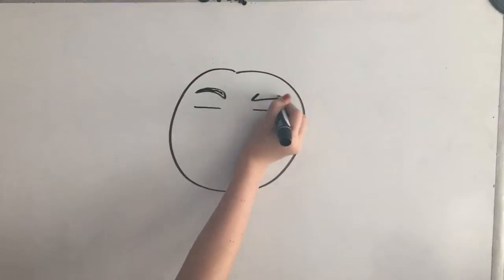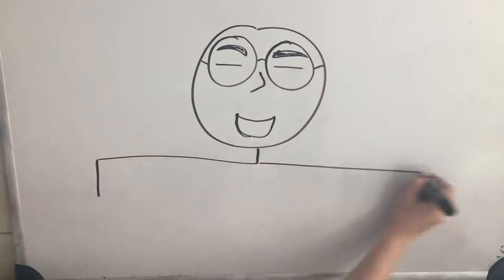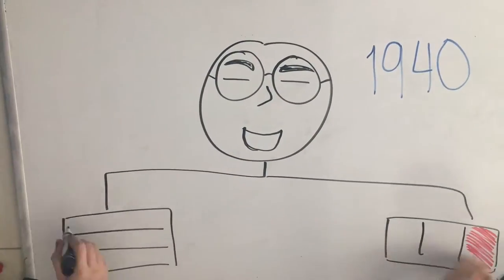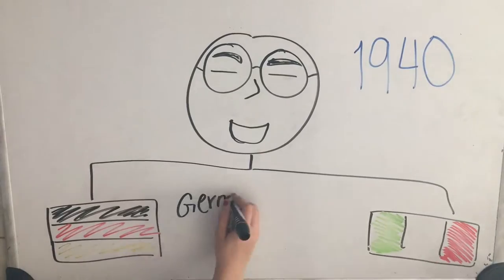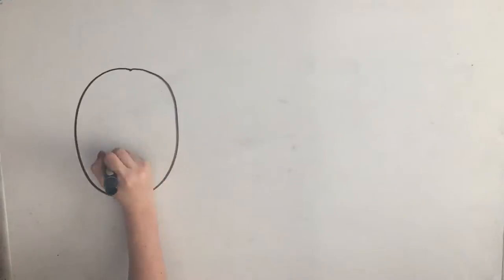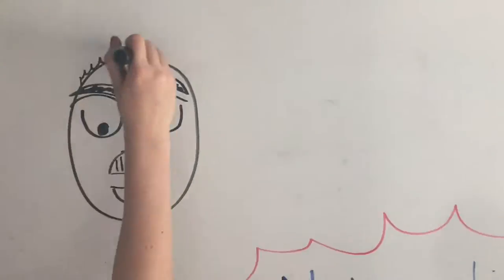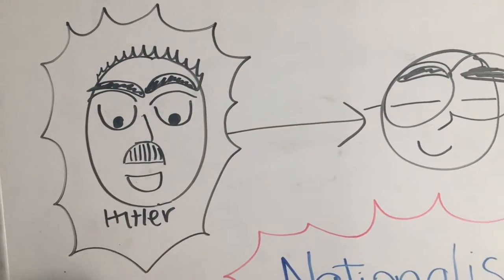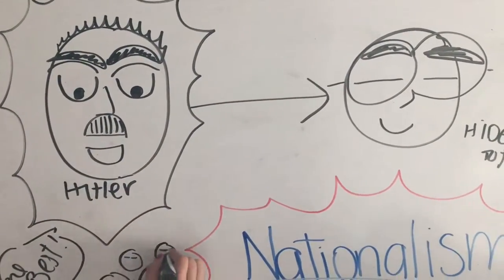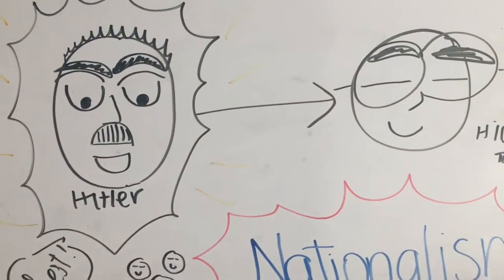In the summer of 1940 Tojo became Minister of War in the government and he made alliances with Germany and Italy. Especially he made alliances with a man, and his name is Hitler! This was because both of them believed that their races were the best of the world.